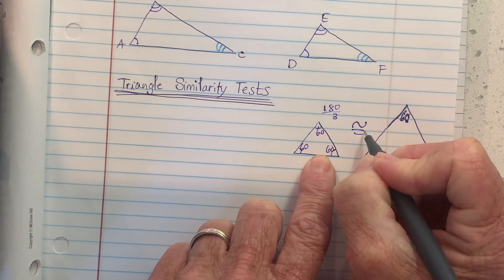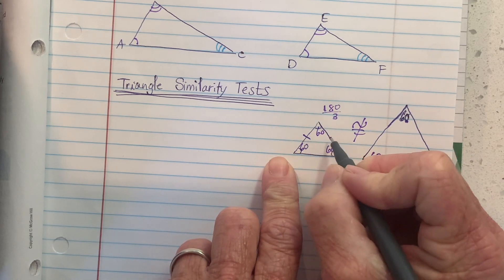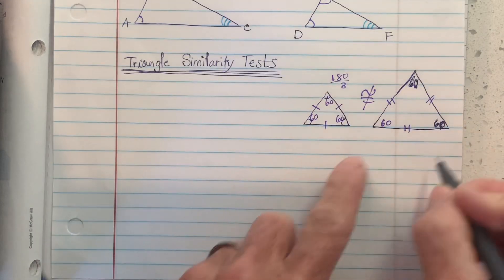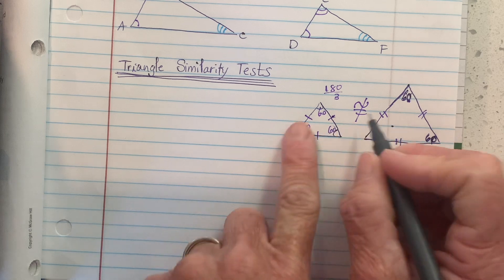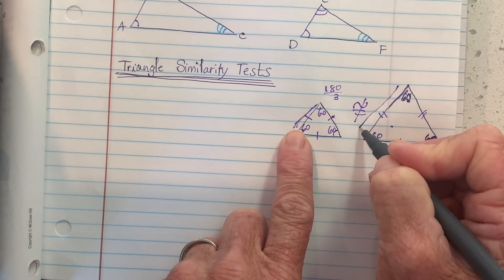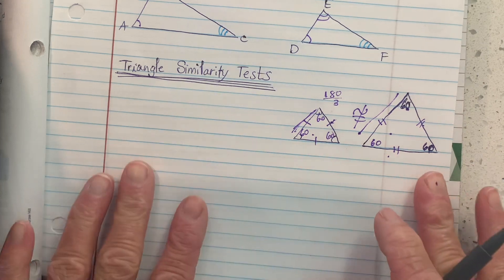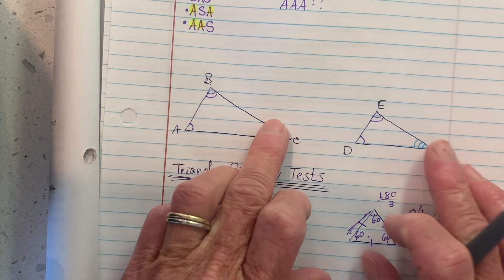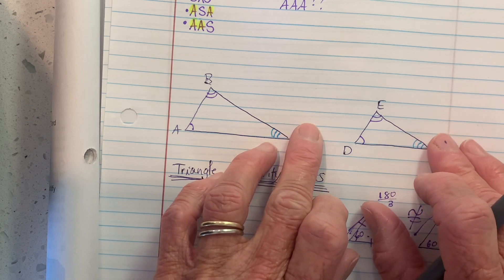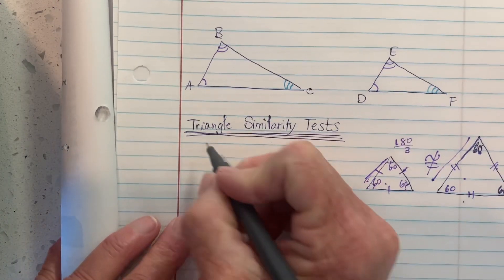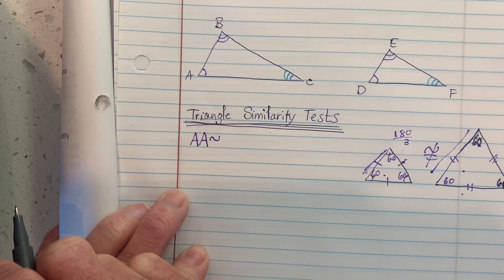That did not guarantee congruency, but it does guarantee that they have the same shape. Both would be equilateral triangles, and there's definitely a scale factor that would take you from one triangle to the other — whatever you multiply one side by to produce the longer length is the same value used for the other pairs of sides. So it turns out that in any two triangles, if just two pairs of angles are congruent, since the third pair by default has to be congruent, this is our quickest similarity test. It's called angle-angle similarity.